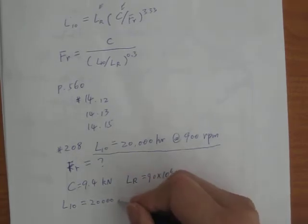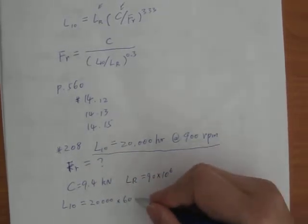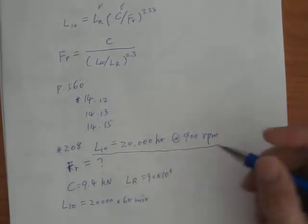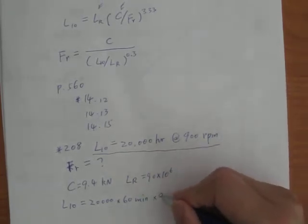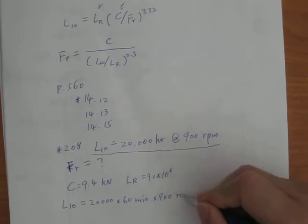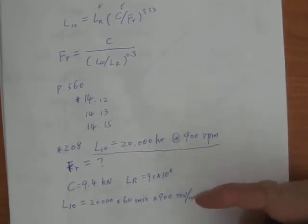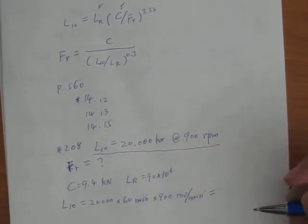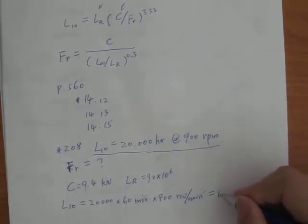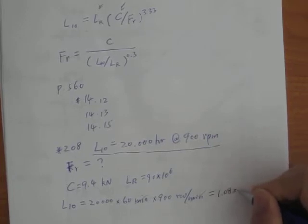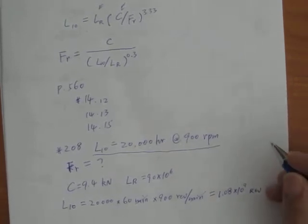We just need to change this into cycles. So L10 is equal to 20,000 hours, and if we times 60 that changes into minutes. If we times 900, that changes to revolutions per minute. Minute cancels out, all we have left is revolutions, and we find out this is gonna be 1.08 times 10 to the 9 revolutions or cycles.